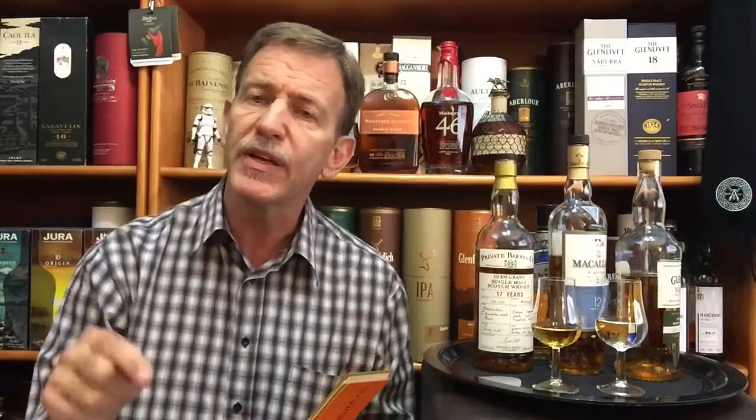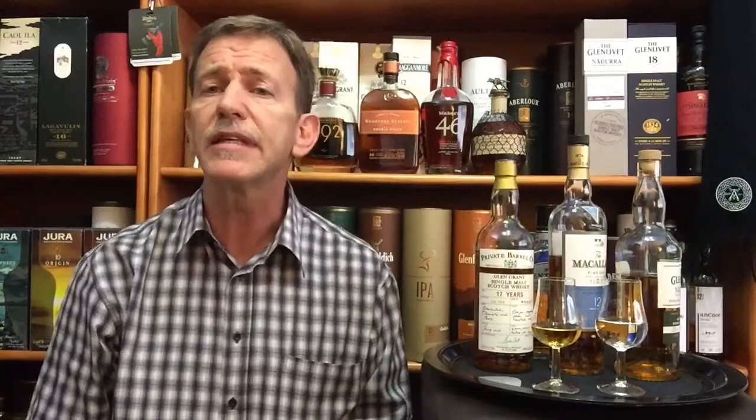Whiskey matured in an ex-bourbon cask — what does that mean? It means that the whiskey was matured in casks that previously held bourbon. The same applies for an ex-sherry cask — a cask that previously held sherry — ex-port cask previously held port, and the same for ex-Madeira, ex-Amarone wine, ex-red wine, and even ex-beer barrels.